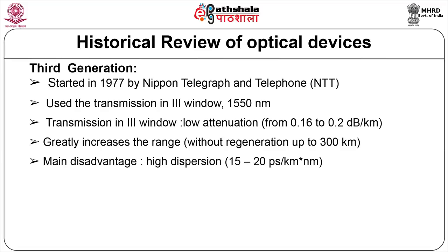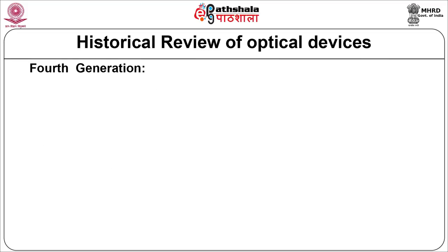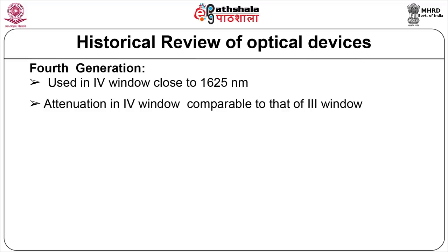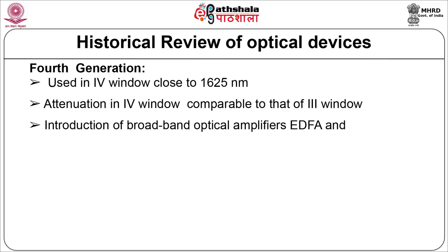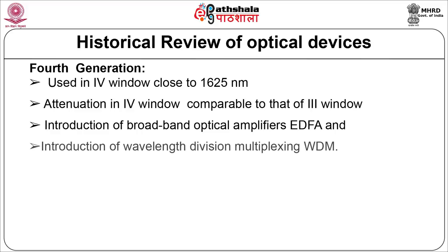The main disadvantage of the third window is high dispersion. Fourth generation: it is used in the fourth optical window close to 1625 nanometer. Even though attenuation in the fourth window is comparable to that of the third window, this considerably simplifies the introduction of broadband optical amplifiers — that is EDFA — and wavelength division multiplexing, that is WDM.